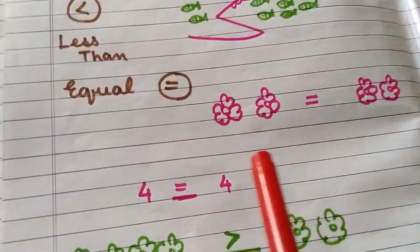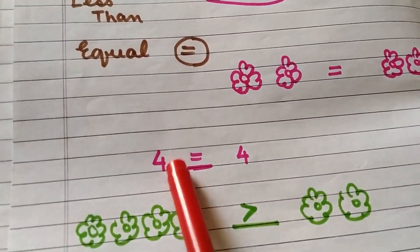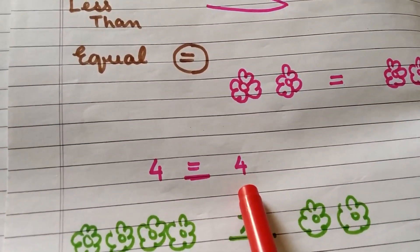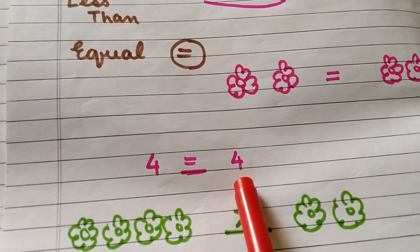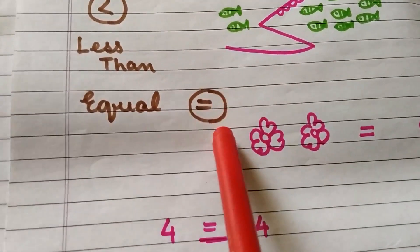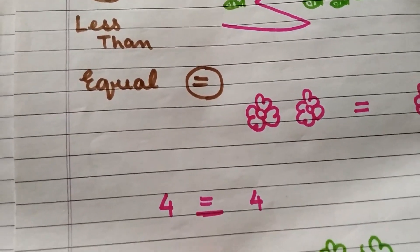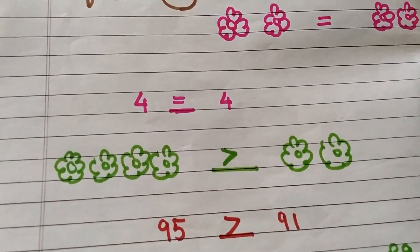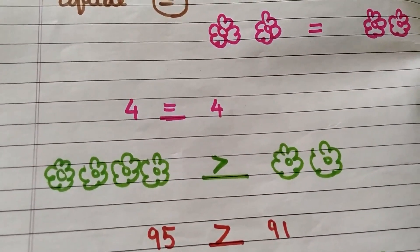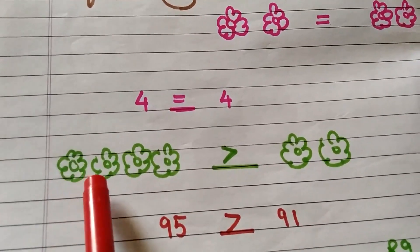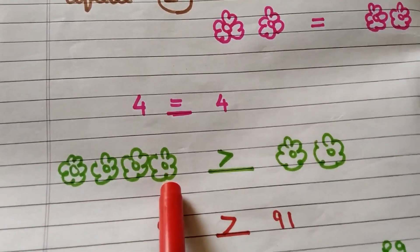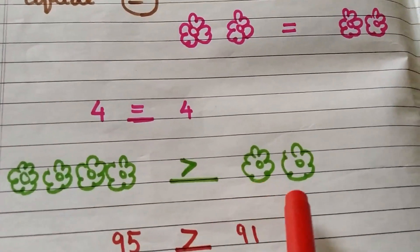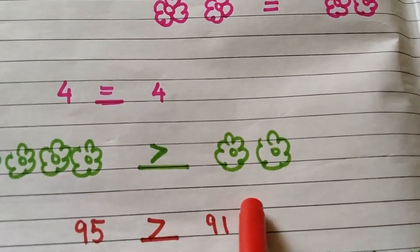Similarly children, look — I have written four on this side and four on the other side. Can you see these two numbers are same? So you will put an equal to sign over here. Now children let us count these number of flowers and see which side is bigger: one, two, three and four. How many flowers are there? Four flowers on this side, and how many are here? Only two flowers.